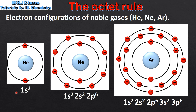Each noble gas has a full outer energy level of electrons. Helium has two electrons in its outer energy level, which is n equals one. Neon has eight electrons in its outer energy level, which is n equals two, and argon also has eight electrons in its outer energy level, which is n equals three. The noble gases are stable because they have full outer energy levels, which means they have the maximum number of electrons in their outer energy level.